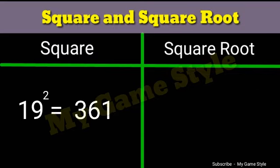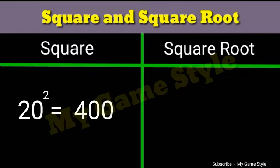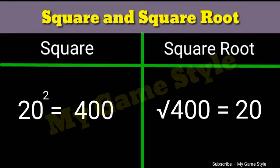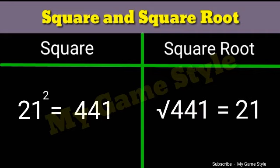Nineteen square is equals to 361. Square root 361 is equals to 19. Twenty square is equals to 400. Square root 400 is equals to 20. Twenty-one square is equals to 441. Square root 441 is equals to 21.